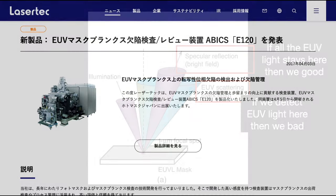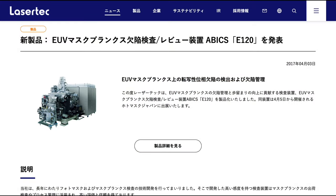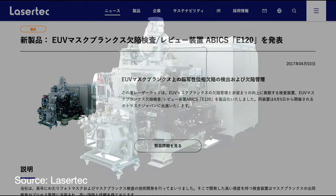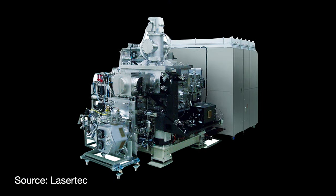Lasertech's pioneering actinic blank inspection tool, the ABICS-E120, caps 20 plus years of research and development. The tool received various awards throughout 2017 and 2018 for its breakthrough nature. They aren't perfect. Notably, they can't inspect the substrate surface where many phase defects originate. Nevertheless, these tools are a critical reason why the industry has been able to drive down the number of mask blank defects over the years.